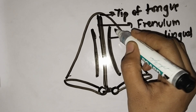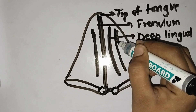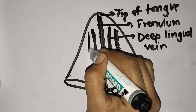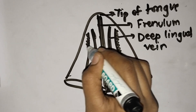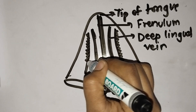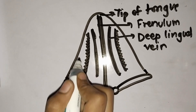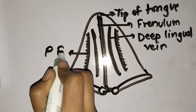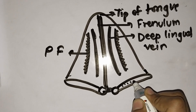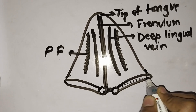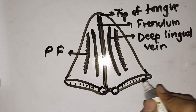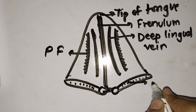Last, we have the plica fimbriata — these are deep fringe-like structures. These small openings are the sublingual openings.